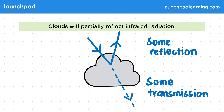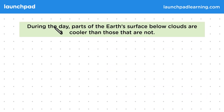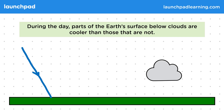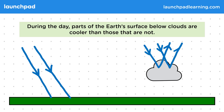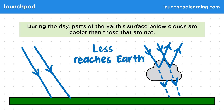So how does this affect the temperature of the Earth? During the day, parts of the Earth's surface below clouds are cooler than those that are not. Remember that during the day, infrared waves from the Sun reach the Earth's surface, transferring energy to the Earth and heating up this part of the surface. However, if the waves have to pass through clouds to reach the surface, then these will partially reflect them. Since only some of the energy of the wave transmits through the cloud, less energy reaches the Earth. As a result, this area under the clouds will be cooler than the areas not under clouds during the day.